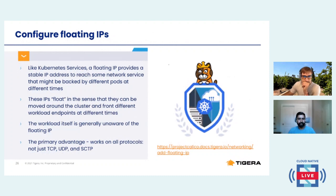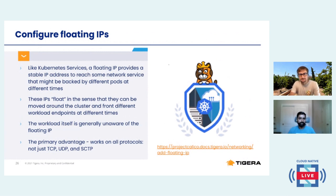Another benefit is floating IPs. Kubernetes services are an abstract way to expose an application. With floating IPs, you can front a workload, and depending on how these workloads move around the cluster, you can use the same IPs for the workloads. For Kubernetes services, the host uses NAT for incoming traffic — to change the floating IP to the workload's real IP before delivering packets. Another advantage is that it doesn't work only with TCP, UDP, or ICMP — it works on all network protocols.